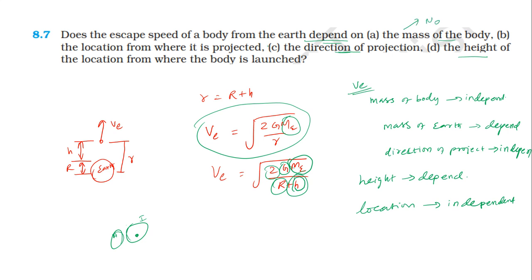To summarize: location from where the body is projected — independent. Direction — independent. Height from the earth surface — dependent, yes.